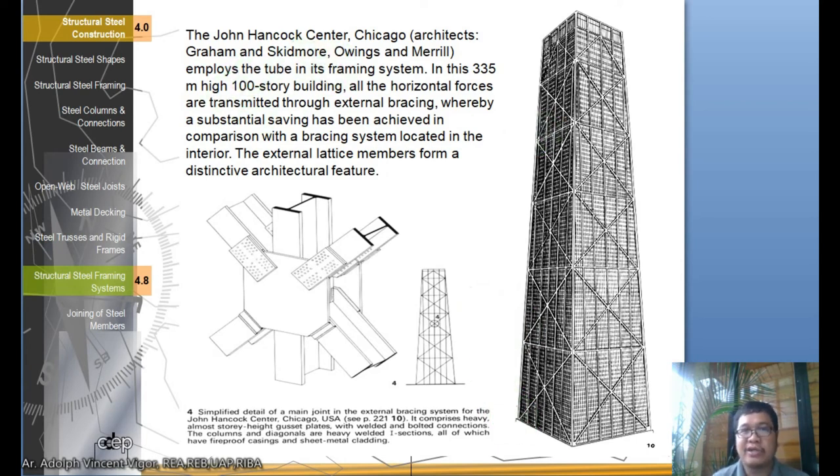This is an example - the John Hancock Center in Chicago. The architects are Graham and Skidmore, Owens and Merrill. I think Skidmore, Owens and Merrill - SOM - they're quite famous in the Middle East because they have designed a lot of high profile structures there. This employs the tube in its framing system. In this 335 meter high, 100 story building, all the horizontal forces are transmitted through external bracing. Thereby substantial saving has been achieved in comparison to a bracing system located in the interior. The external lattice members form a distinctive architectural frame. You can also appreciate that the external bracing looks good outside, as well as being structurally functional.